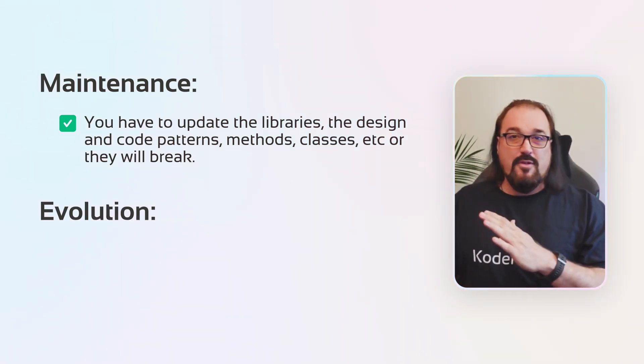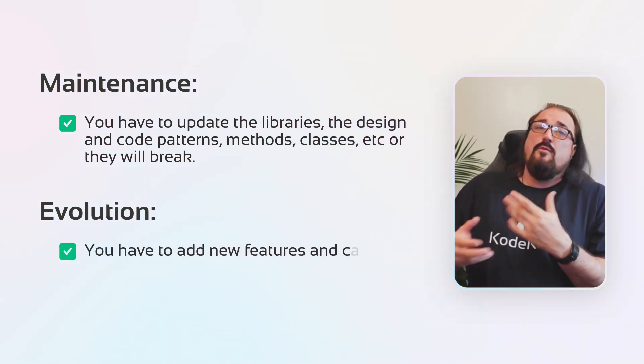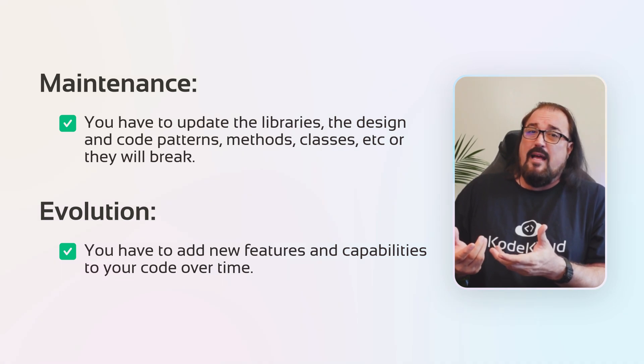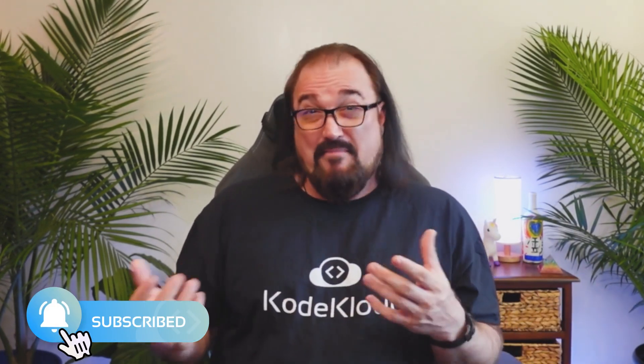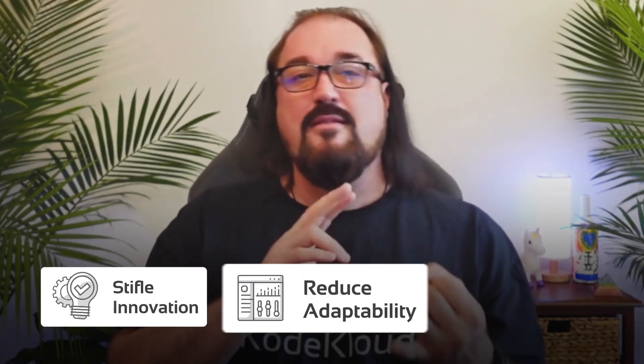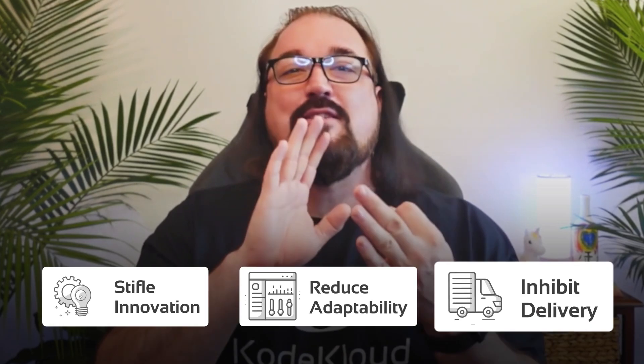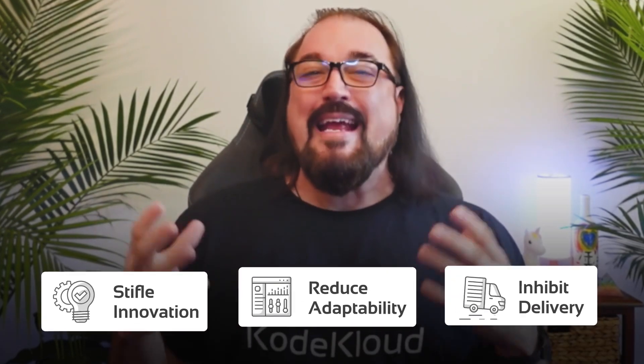On the evolution side, you have to add new features and capabilities to your code over time. If you don't maintain your software or if you add new features, you're going to create unintentional technical debt. As the software grows, it gets more complex, and it starts to stifle innovation, reduce adaptability, and inhibit delivery. These are all great indicators that you have technical debt.